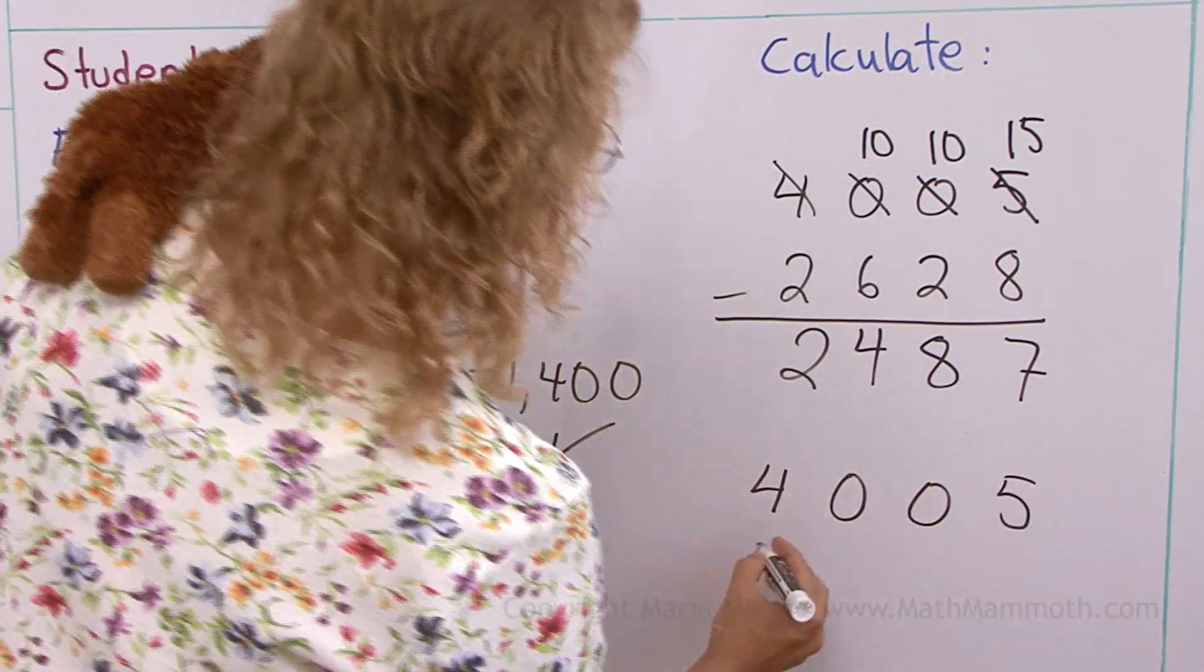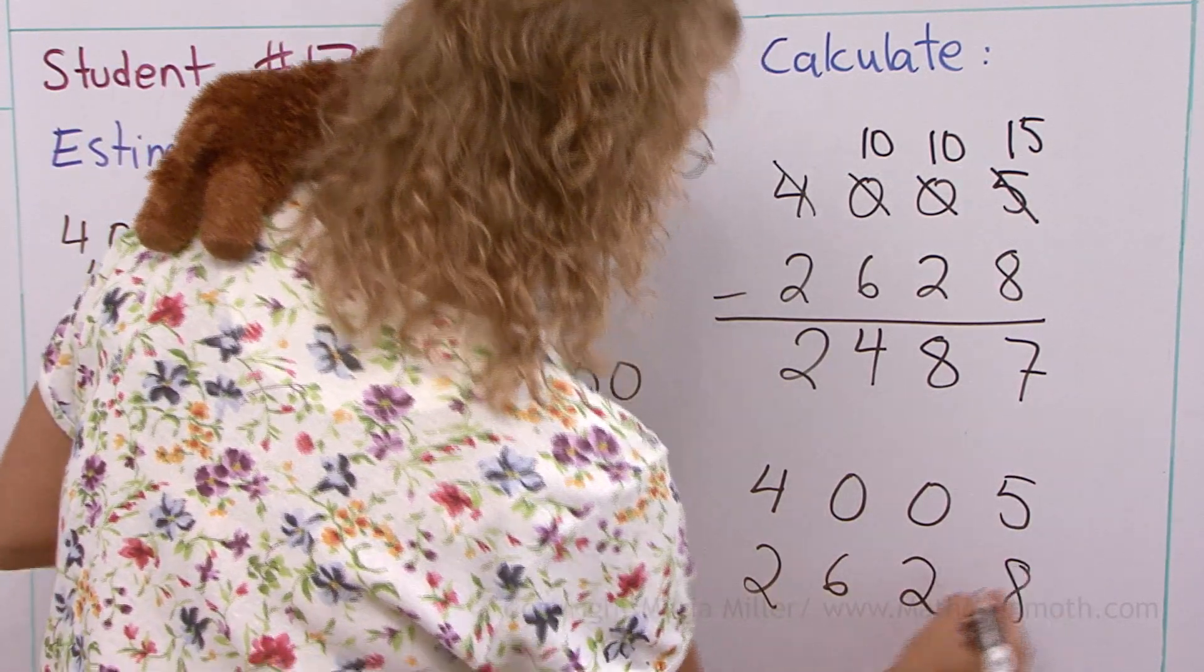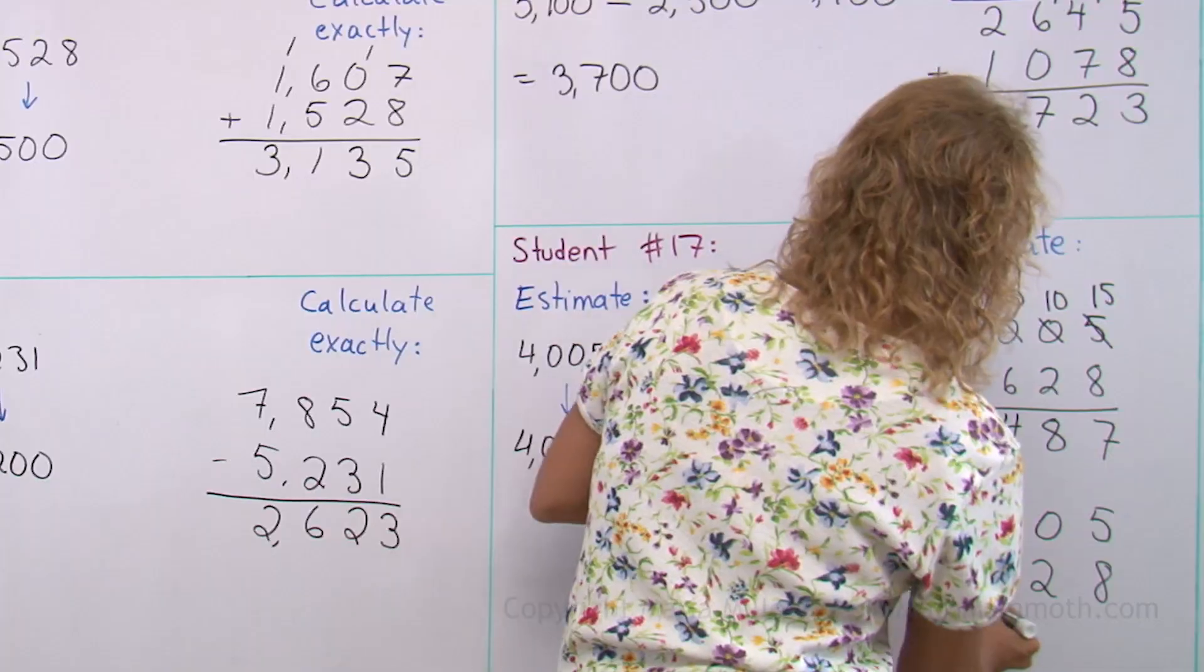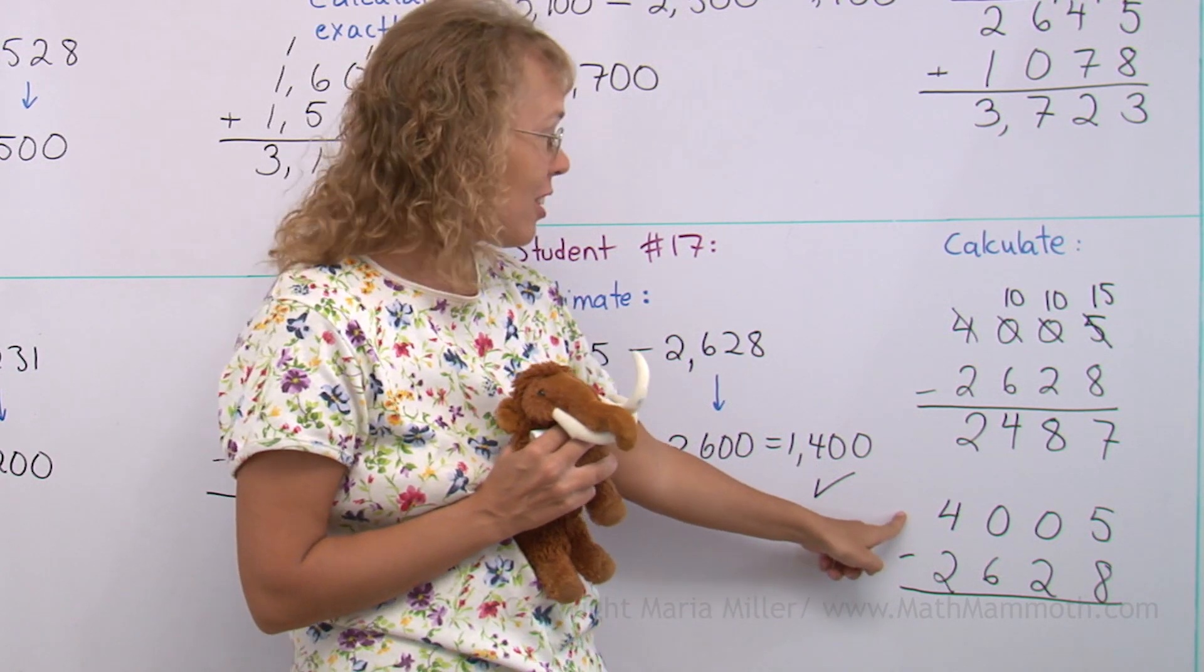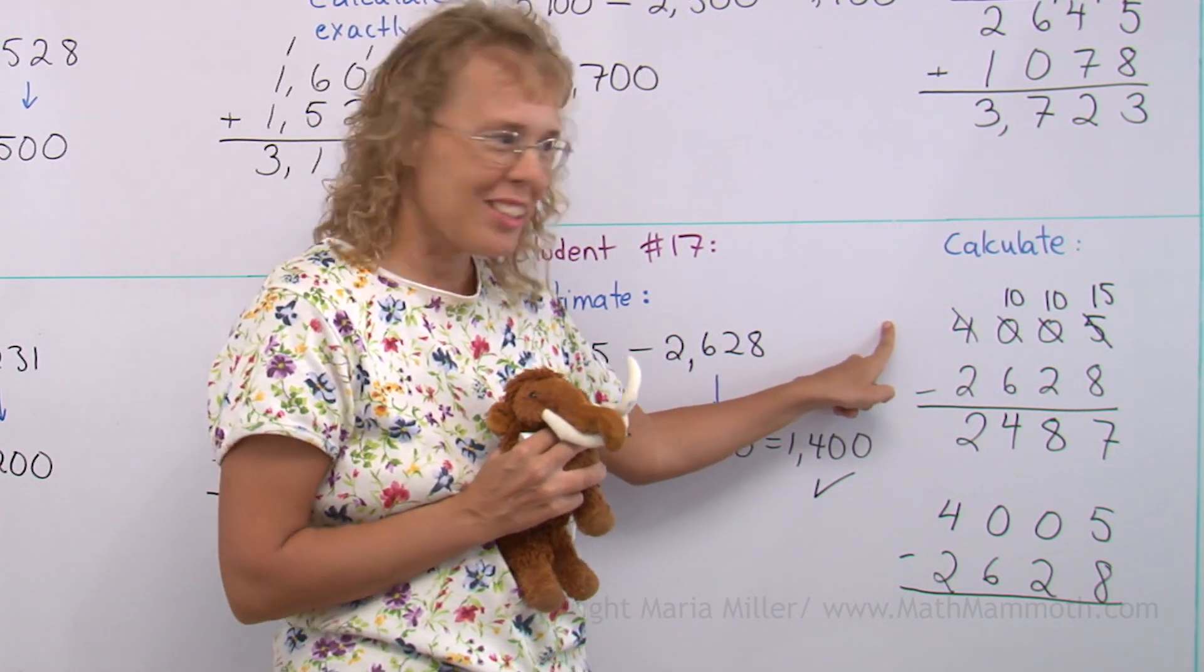4005. 2628. Mathi wants to come to it. The regrouping can be tricky when you have lots of zeros. So it's no wonder sometimes students get it wrong.